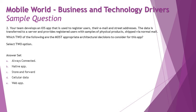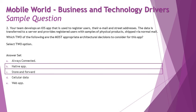Option D — cellular data — is not the most important consideration since the user is able to work offline; whether you have Wi-Fi or cellular data doesn't really matter here. Option E — web app — would require constant connectivity, but the scenario says you can work offline, so a web app is not needed. Since native was chosen, it cannot be a web app or hybrid. Putting it all together, the right answer is B — native app — and C — store and forward.